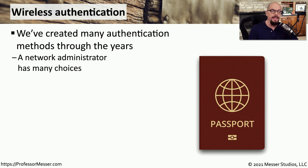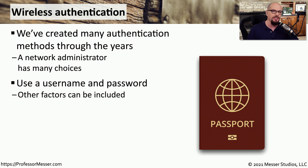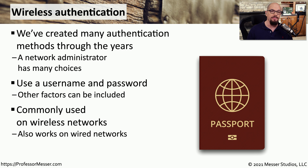In a previous video, we talked about the need for authenticating to a wireless network. There are many different ways that you could authenticate to a network, and we've used many of these different authentication methods on our different networks through the years. The most common type of authentication someone would use is their username and password, and it's not unusual to add other types of authentication factors along with those. Although we'll sometimes use these authentication methods for wired networks, it's very common to also see this on wireless networks — mostly because wireless networks are sending and receiving into the air, and anyone nearby with a wireless device could attempt to connect.